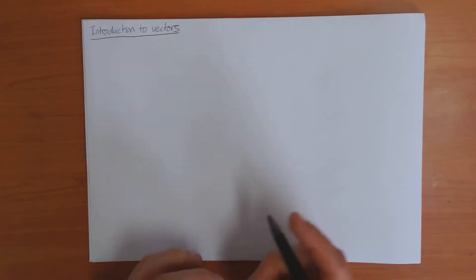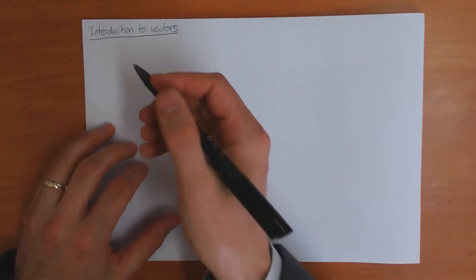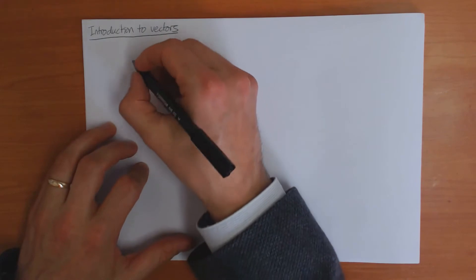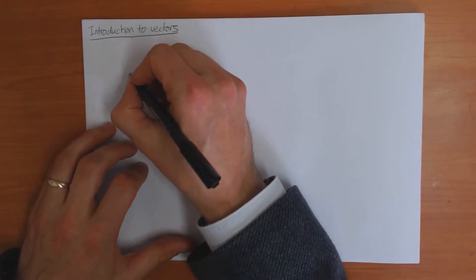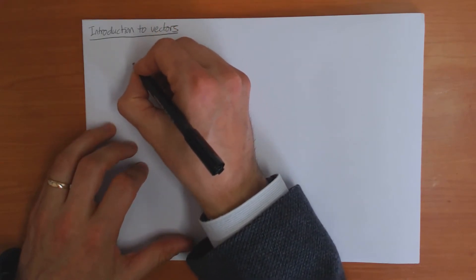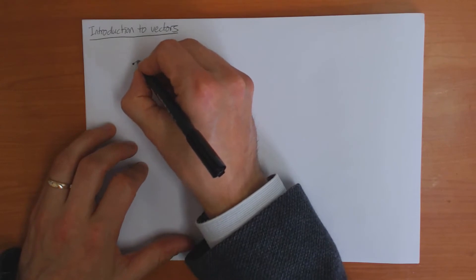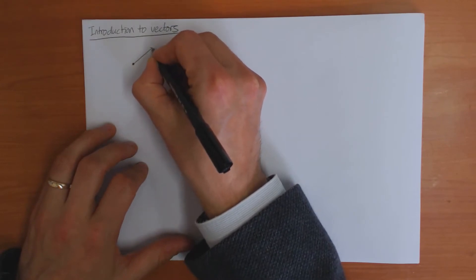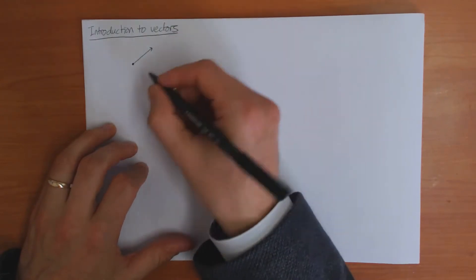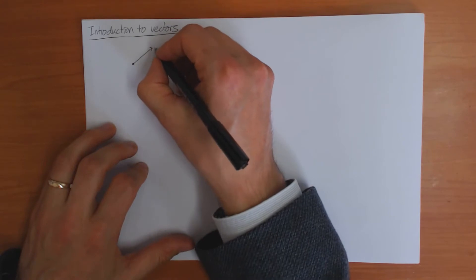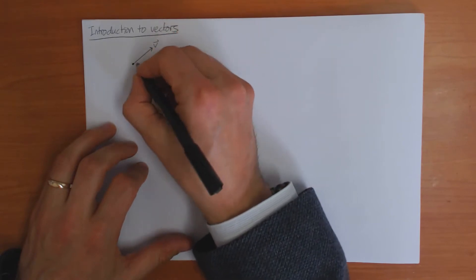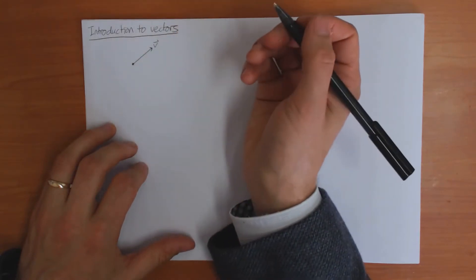In this first video, I'm going to define what vectors are and some of their most important properties. Physically, we think of a vector as something which has a direction and a certain length. If I start from a point here, a vector is some kind of arrow coming out of this point. We can call this the vector v — it has a certain direction and a certain length.